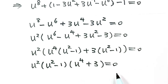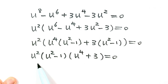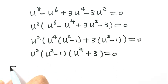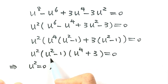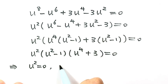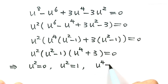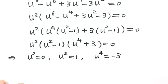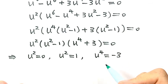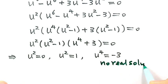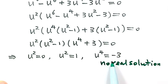Setting each factor equal to zero: the first gives u² equals 0; the second gives u² equals 1; the third gives u⁴ equals negative 3, which has no real solution since u⁴ cannot be negative.